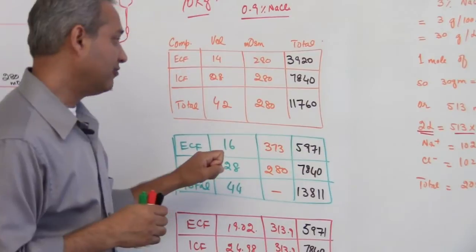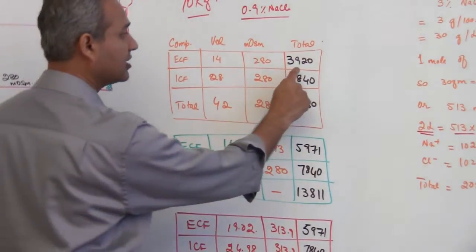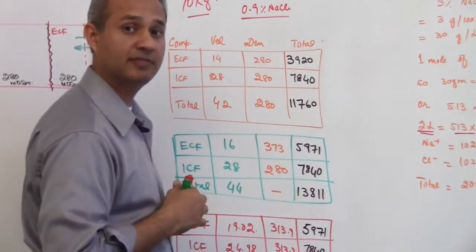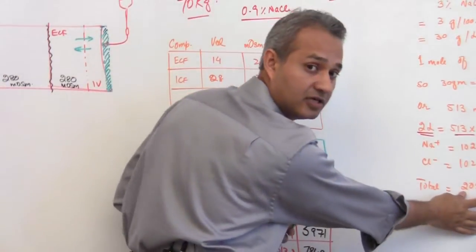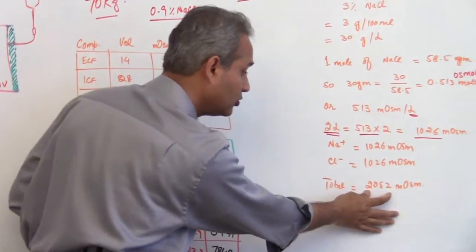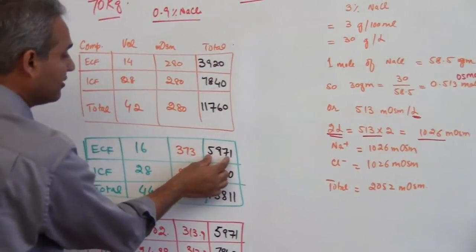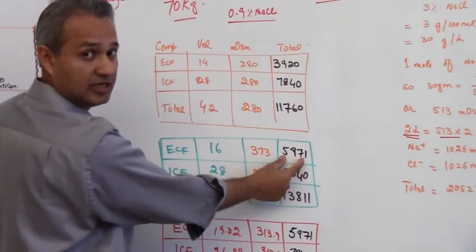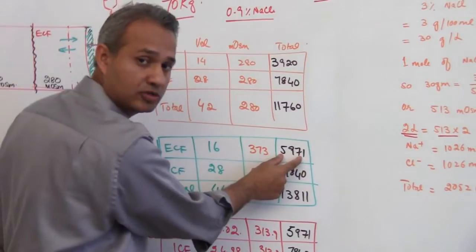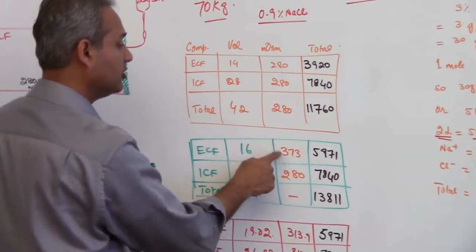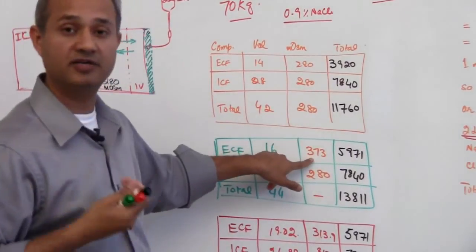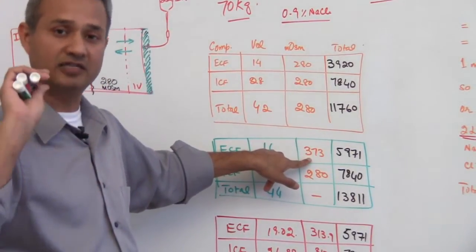The osmolarity of that fluid was that we had 3920 milliosmoles present before, we have added another 2052 milliosmoles, so we have gotten a total of 5971 milliosmoles. If we divide these two values, the osmolarity comes to be 373 milliosmoles per liter.